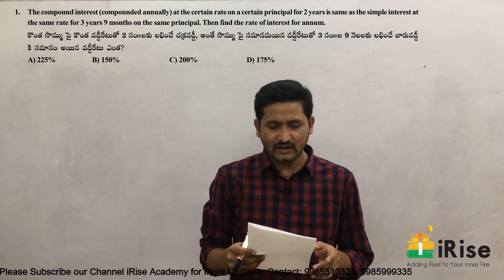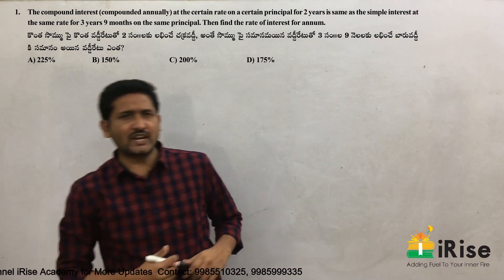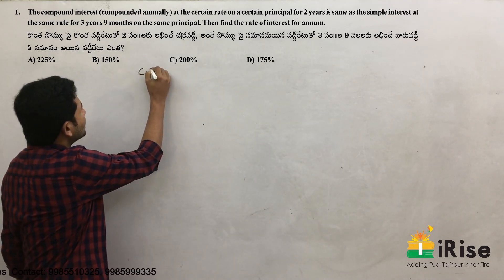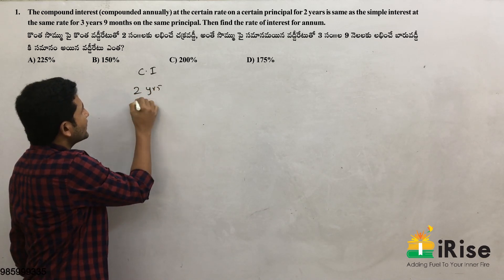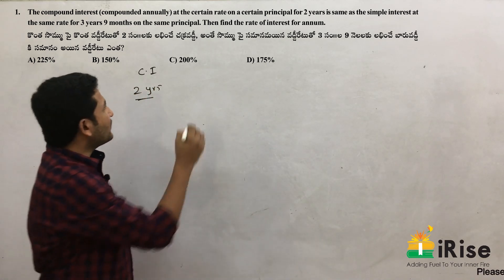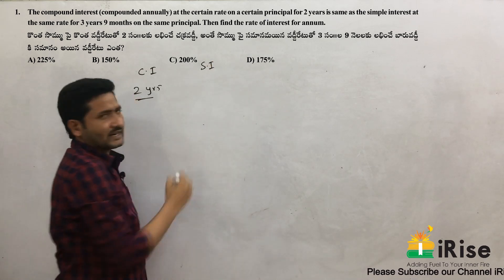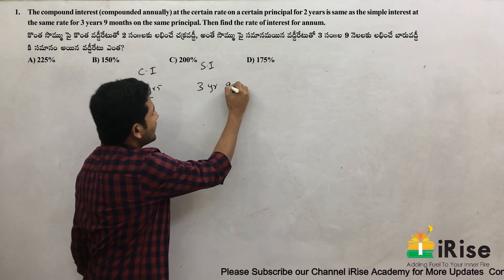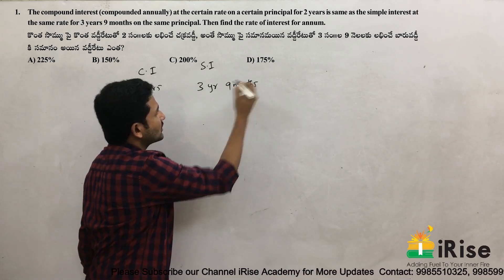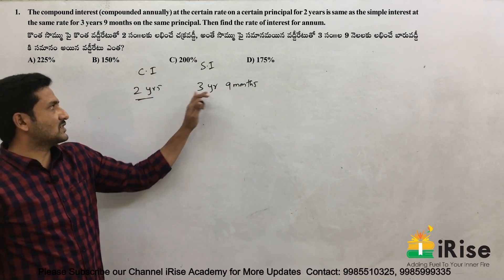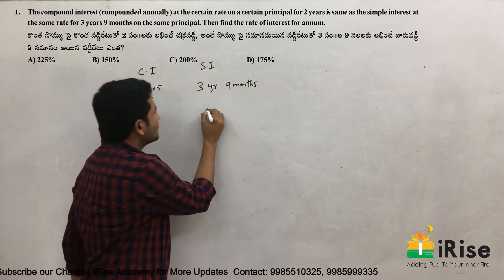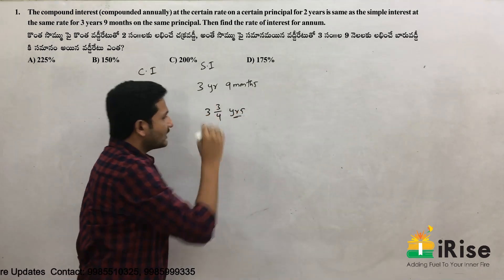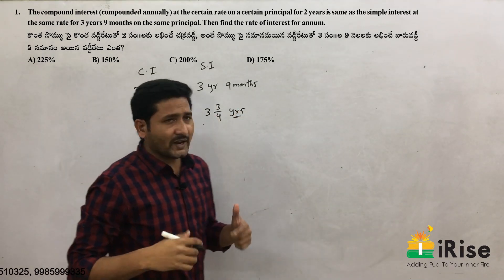So the question says: two years' compound interest equals the total simple interest. Three years nine months — that means three and three-quarter years, i.e., 3¾ years. Let's apply basic compound interest concepts here.